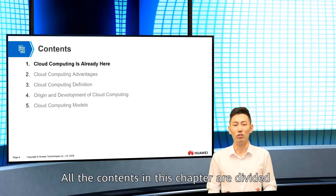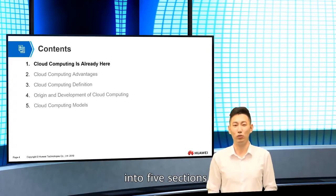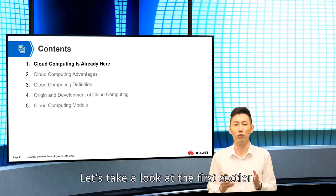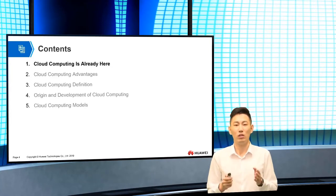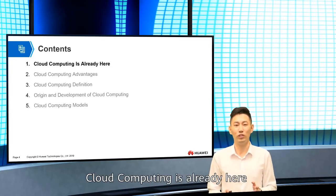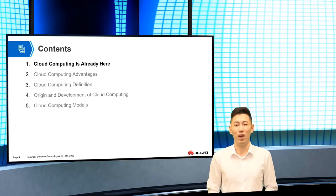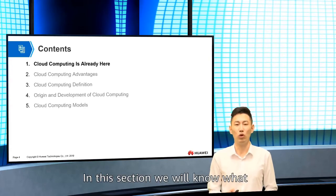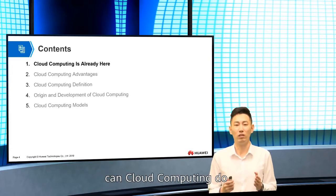All the contents in this chapter are divided into five sections. Let's look at the first section: Cloud computing is already here. In this section, we will know what cloud computing can do.